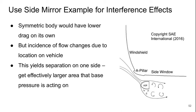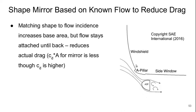If the mirror was just on its own, it would have the lowest drag by being symmetric left to right. But the flow is not coming straight at it — because of the A-pillar and the windshield, the flow arrives at high incidence and the stagnation point is shifted outward. This causes a large separation on the outside, effectively increasing the cross-sectional area on which base pressure acts. We can shape the mirror based on the known flow features to reduce drag — matching the shape to the flow incidence keeps the flow attached all the way to the back and reduces the actual drag.